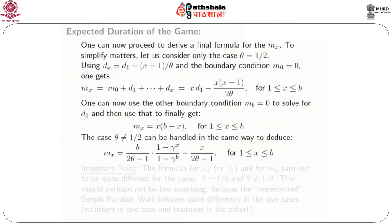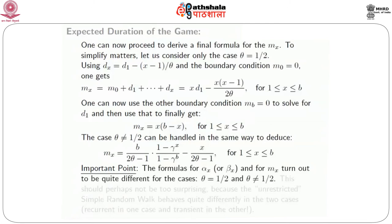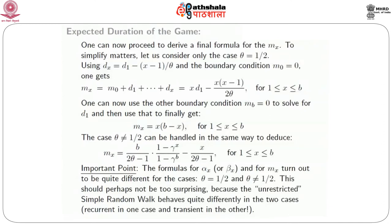As an exercise, one can also consider the case θ ≠ 1/2 using the same algebra to obtain the corresponding explicit formula for m_x. Importantly, the formulas for α_x, β_x, and m_x turn out to be quite different for θ = 1/2 versus θ ≠ 1/2. This is not surprising because the unrestricted simple random walk itself behaves differently in these two cases — it is recurrent when θ = 1/2 and transient otherwise.